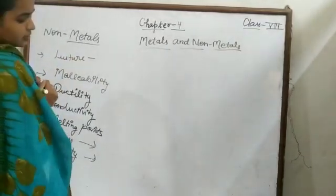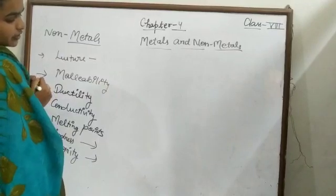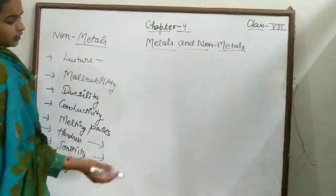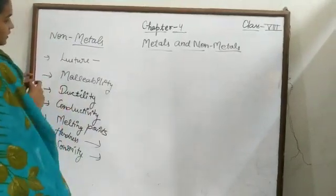Non-metals generally do not have luster. They have dull appearance. Such exceptions like graphite, diamond and iodine have still shine.